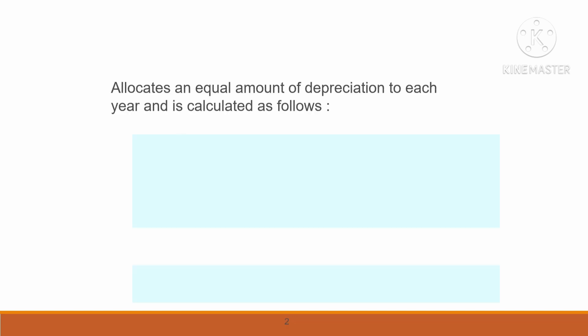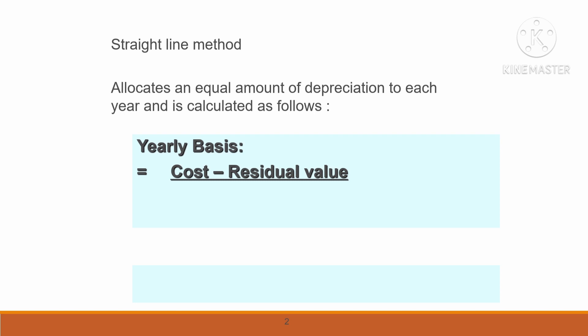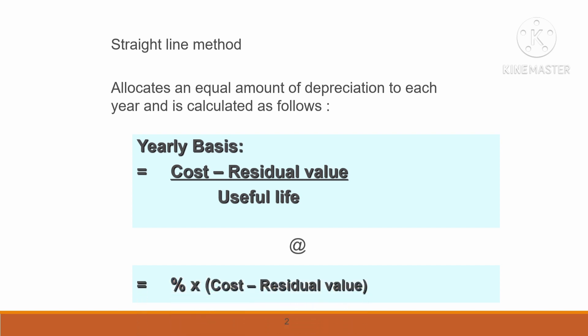So this is the formula for the straight line method. The first formula is: cost less residual value, divided by useful life. The second formula is: percentage times cost less residual value. So this is the straight line method.